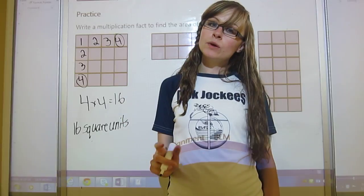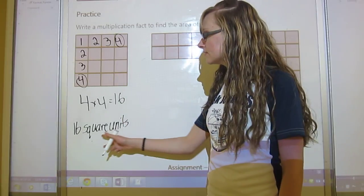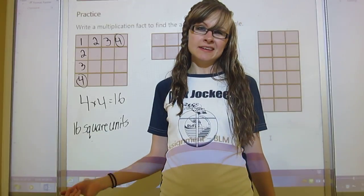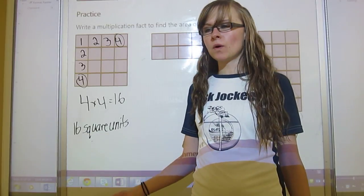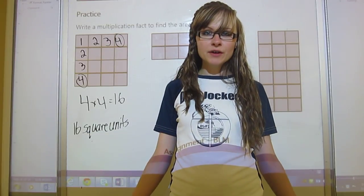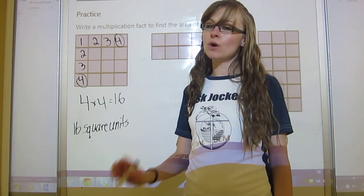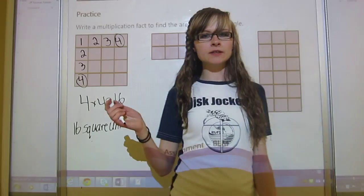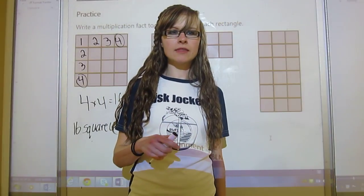In area, it's important that you put the units, even if it's just square units, because if you just write 16, I don't know if that's a length, or a width, or a volume. Square units always means area, and that's how we tell. So pause the video and try this one and this one, and then we'll go through it together.